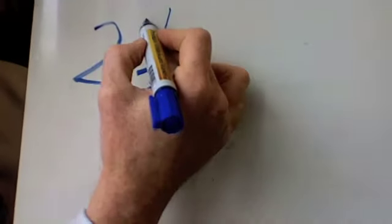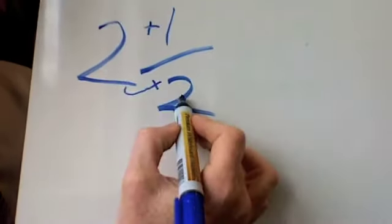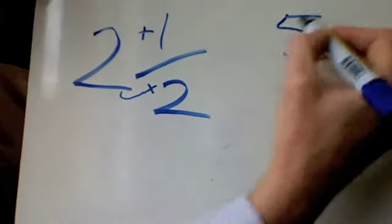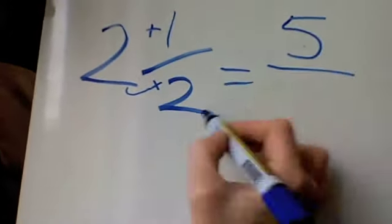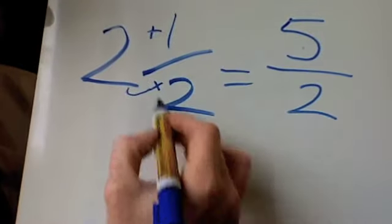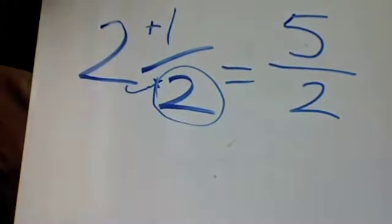and then I move up to the top and add 1. 2 times 2 is 4, plus 1 gives me 5 over 2. You always put your answer over that denominator of the fraction.